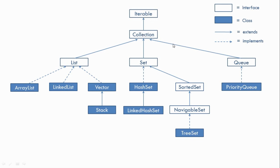At the top we have the Iterable interface, then the Collection interface which extends from Iterable. After that we have a few more interfaces: List, Set, and Queue, which again extend from the Collection interface. Then we have implementation classes — for example, ArrayList implements the List interface, HashSet implements the Set interface, and TreeSet implements the NavigableSet interface, and so on.